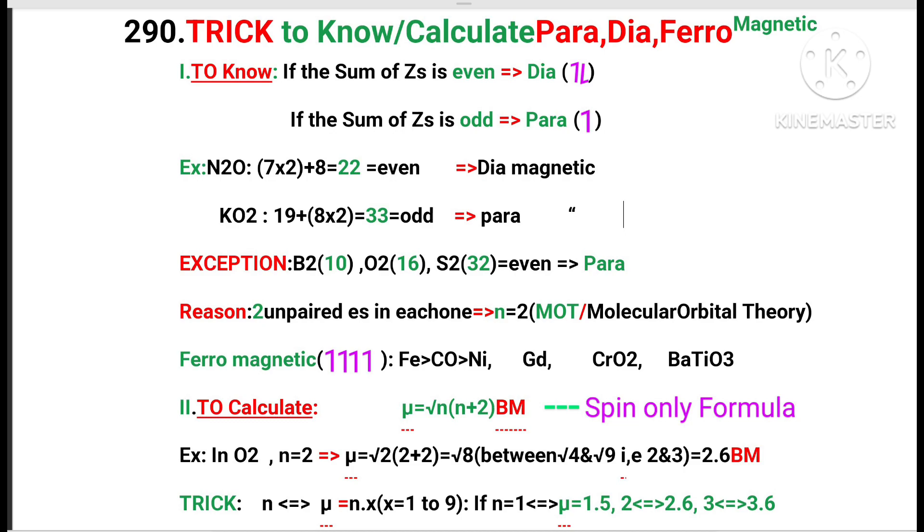For example, if n equals 1, then magnetic momentum is 1.5. Or if magnetic momentum is 1.5, number of unpaired electrons is 1. If n equals 2, magnetic momentum is 2.6 and vice versa. If n equals 3, magnetic momentum is 3.6 and vice versa. Like this, you can easily solve the problem.